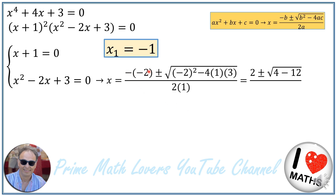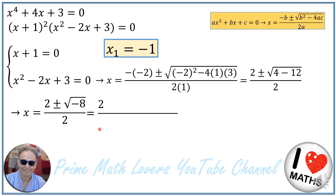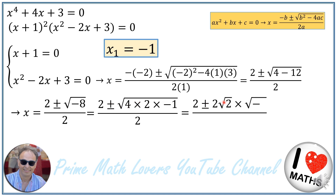Negative negative 2 is positive 2; (negative 2) squared is 4, and negative 4 times 3 is negative 12. So we will have 2 plus or minus square root of 4 minus 12 over 2, or 2 plus or minus square root of negative 8 over 2. I can rewrite negative 8 as 4 times 2, take out the 4 from the radical, and I will have 2 plus or minus 2 times square root of 2 times square root of negative 1. The square root of negative 1 is the imaginary number denoted as i.